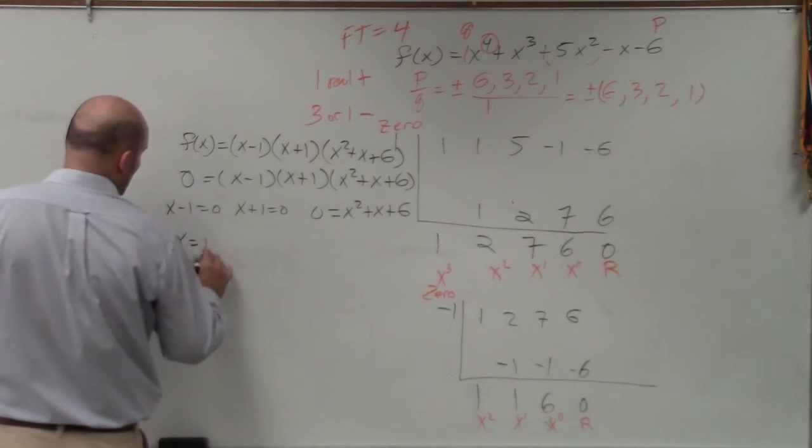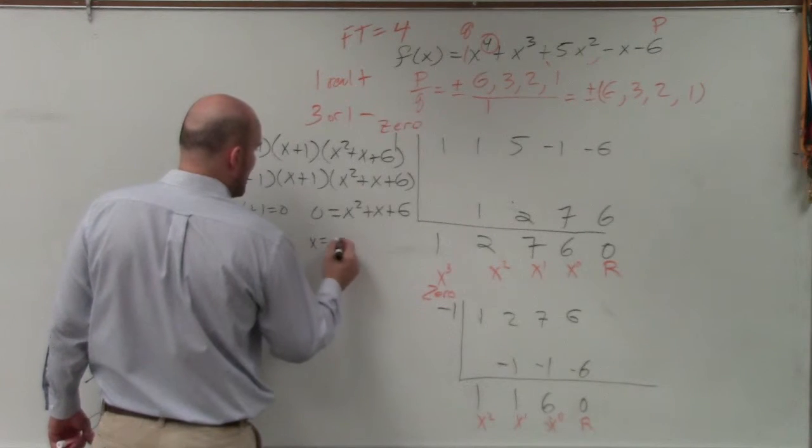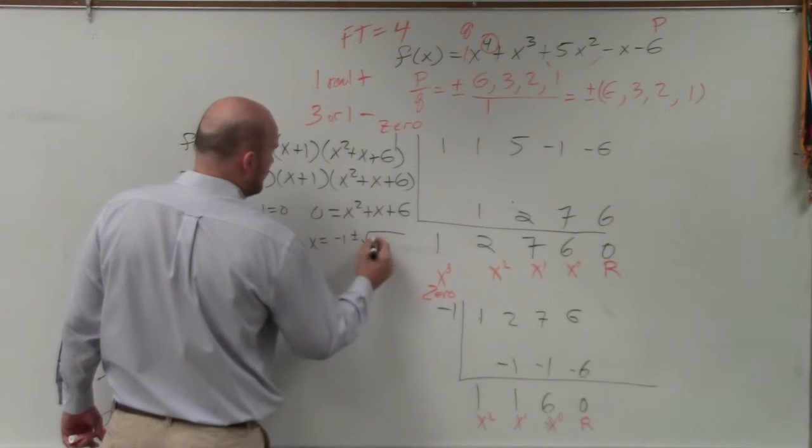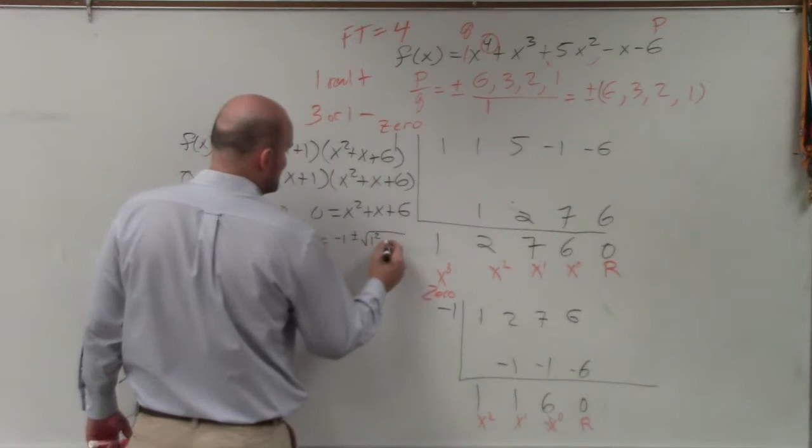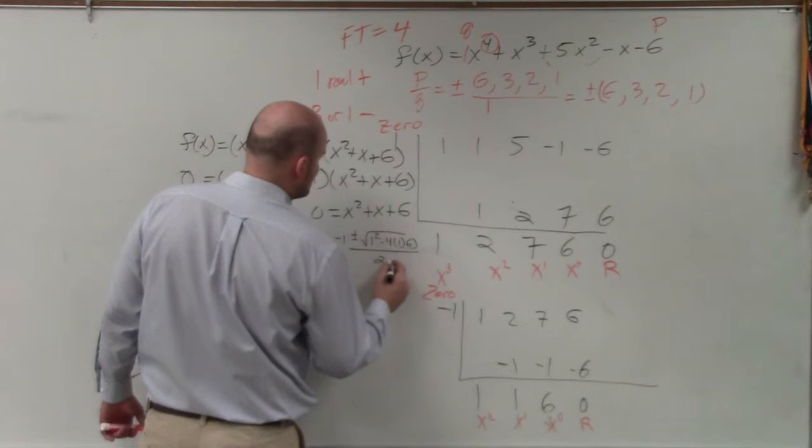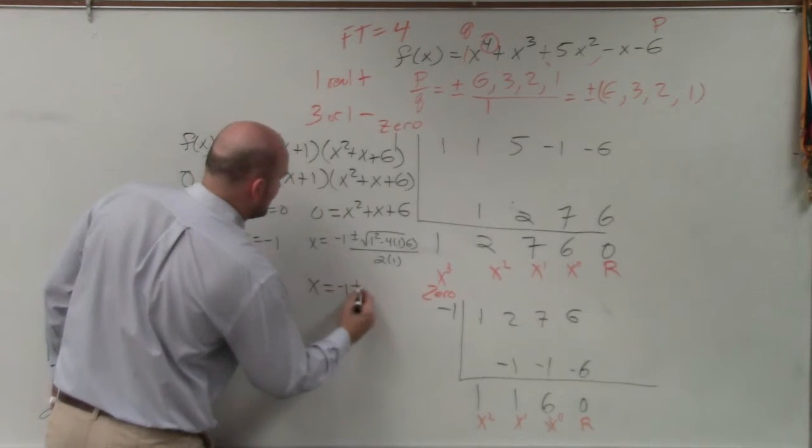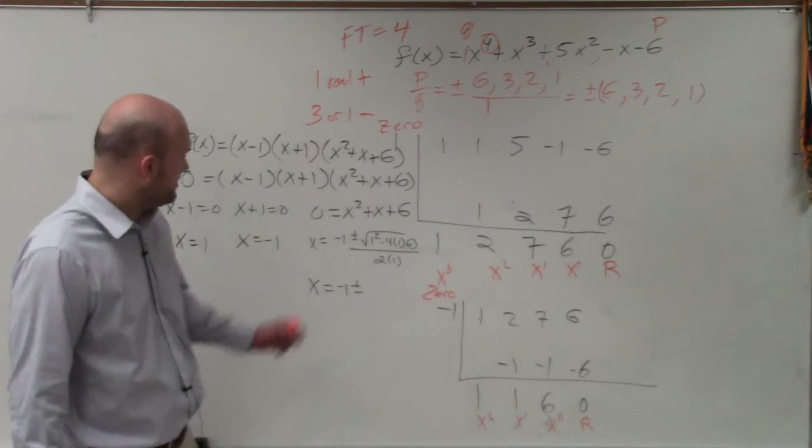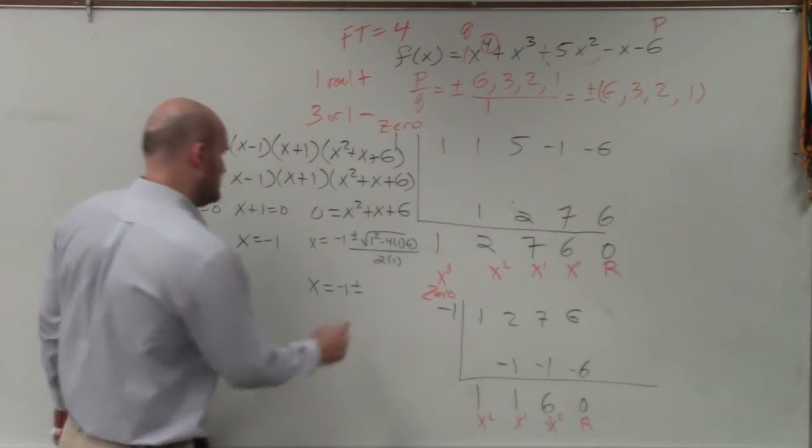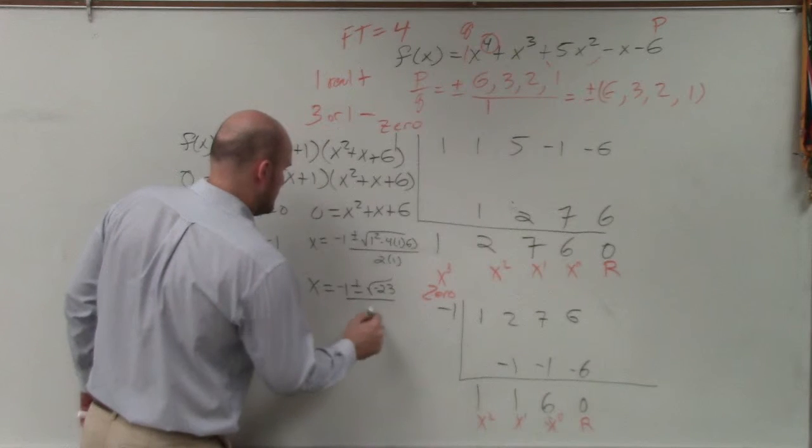So therefore, we know x equals 1. x equals negative 1. Here, it's going to be x equals opposite of b. So it's negative 1 plus or minus the square root of 1 squared minus 4 times 1 times 6, all divided by 2 times 1. x equals negative 1 plus or minus 1 squared is going to be 1 minus 24.